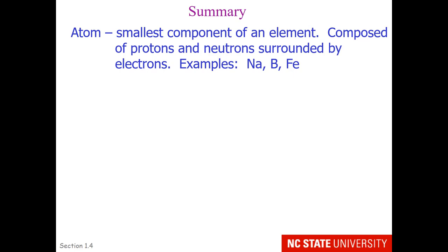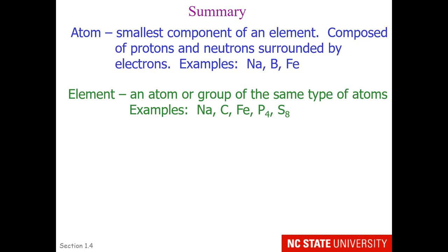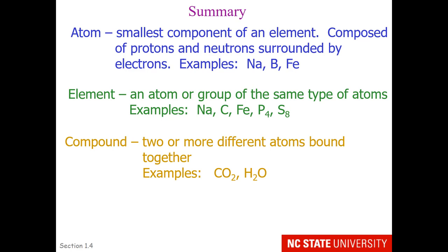In summary: there's an atom, which is the smallest component of an element. These would be things composed by protons and neutrons surrounded by electrons. Examples are sodium, boron, or iron. Element—this is an atom or group of the same type of atoms that is the most stable form on our planet. Examples are sodium being alone or P4 being a group of four phosphoruses.